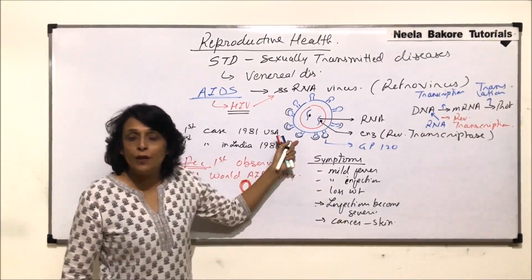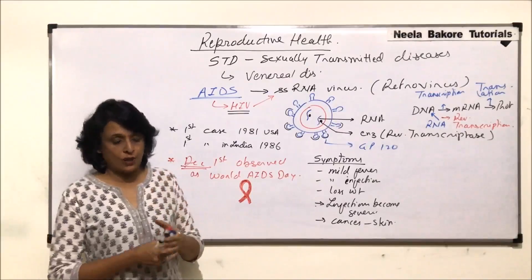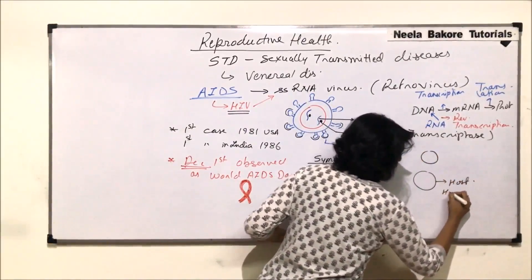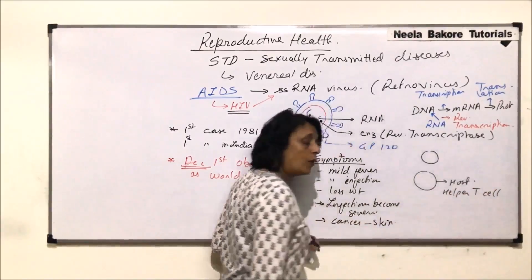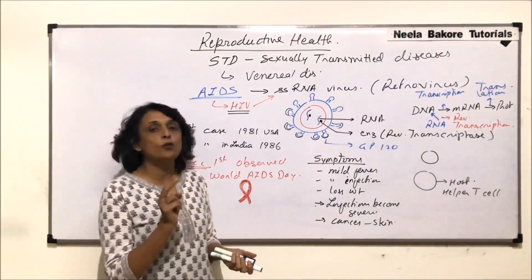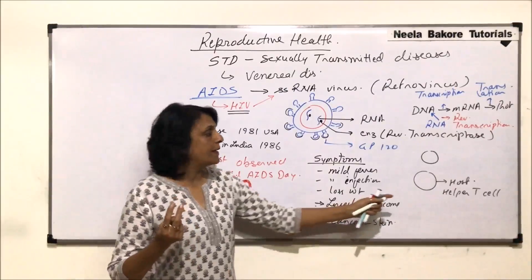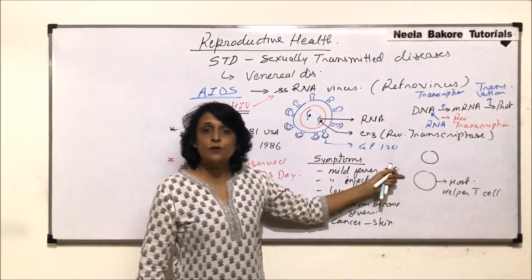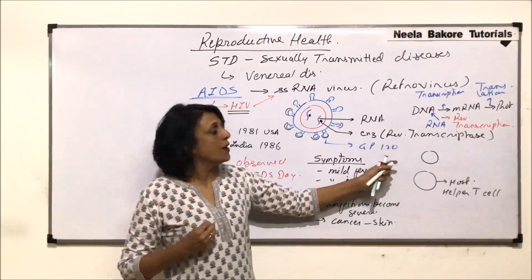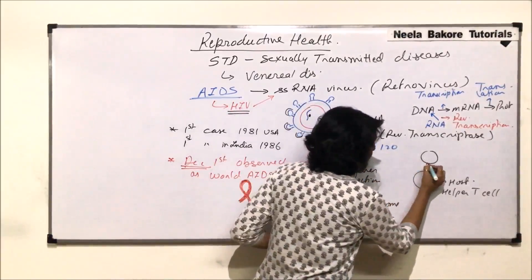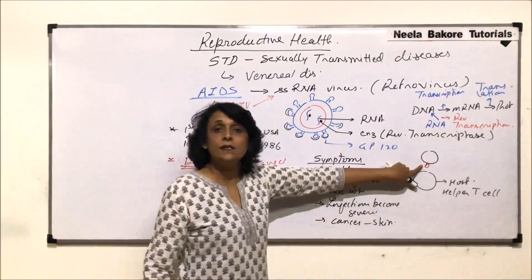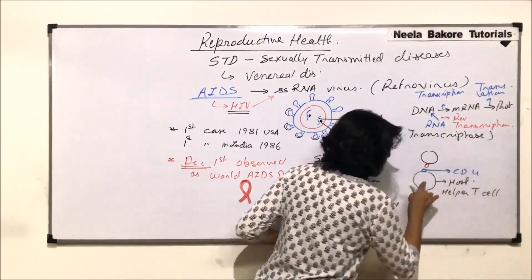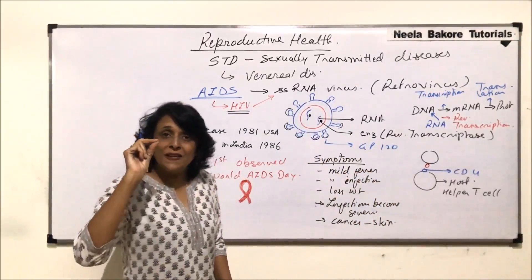What exactly is the virus doing? The virus infects the host cell — specifically the helper T cell. In our body, the immune system has two parts: cell-mediated immunity with T cells and B cells, and humoral immunity where antibodies or immunoglobulins work. HIV's GP120 comes in contact with the CD4 protein which is on the helper T cell.